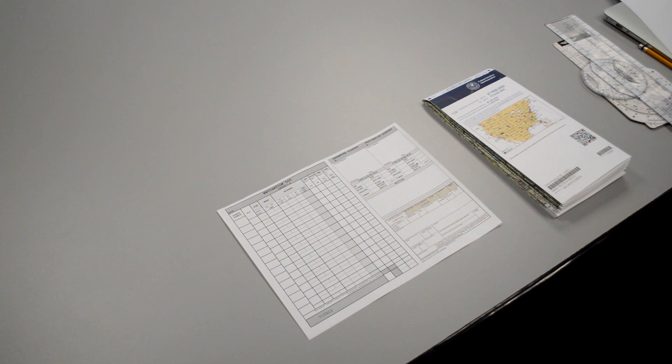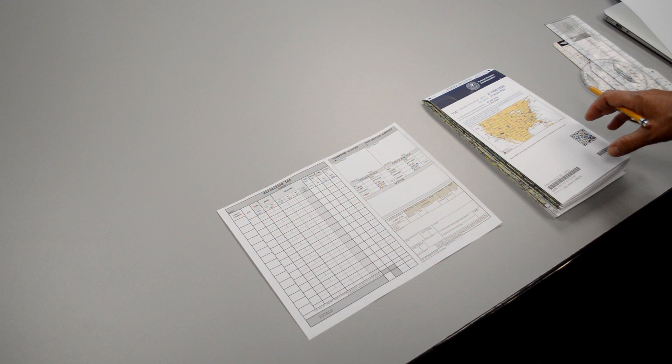Step number five on our cross-country flight plan is to draw a line on our sectional chart. And then we're going to end up filling in our nav log.